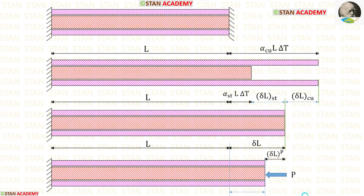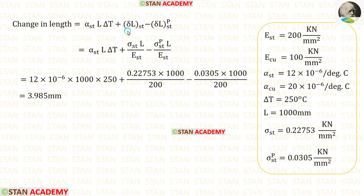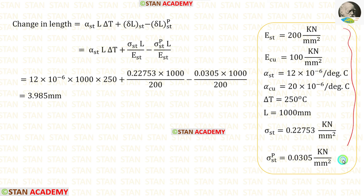Now we are going to find the final change in length. To find this we add α_ST × L × ΔT and delta L_ST, then subtract delta L_P. Applying the expressions derived earlier for delta L_ST and delta L_P_ST, and substituting all values, we finally get the change in length equal to 3.985 mm.